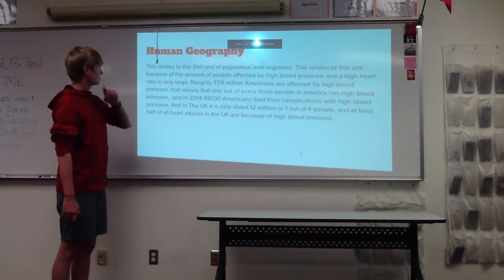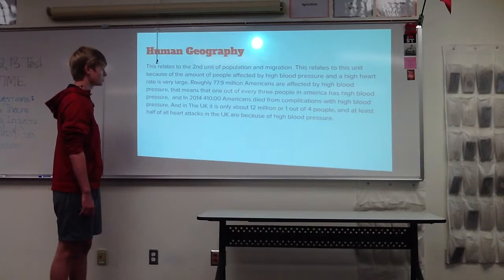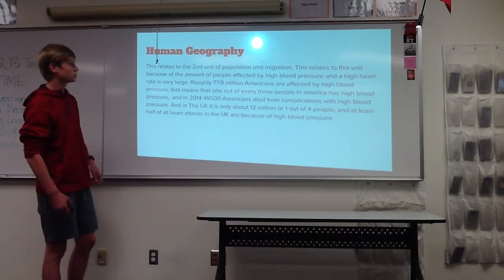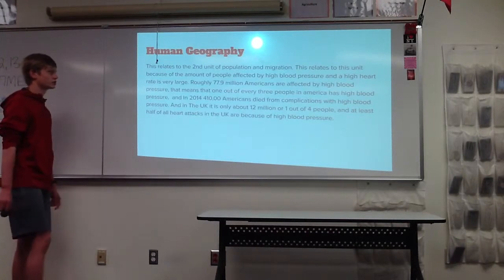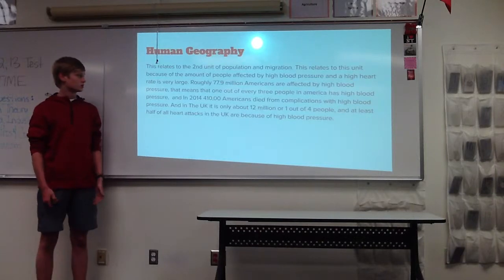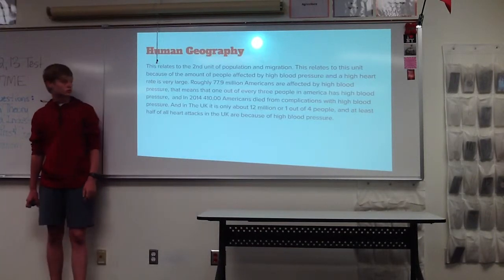Human geography. It relates to population and migration because 77.9 million Americans, this is just America, are affected by high blood pressure. One out of every three people has high blood pressure, and in 2014 alone it killed 410,000 people in America.